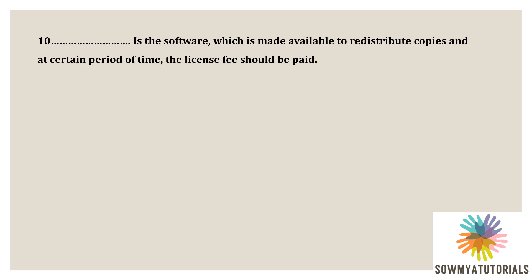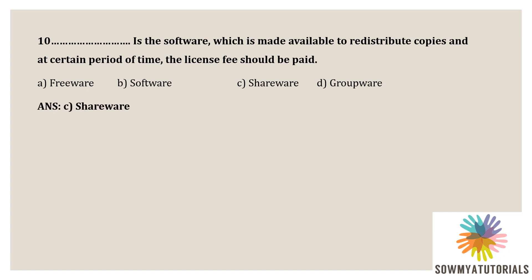The next question is: software which is made available to read and distribute copies, but after a certain period of time a license fee must be paid, is called what? Options: A) Freeware, B) Software, C) Shareware, D) Groupware. The correct option is C) Shareware. Shareware is software made available to use and redistribute, but after a certain period a license fee must be paid.